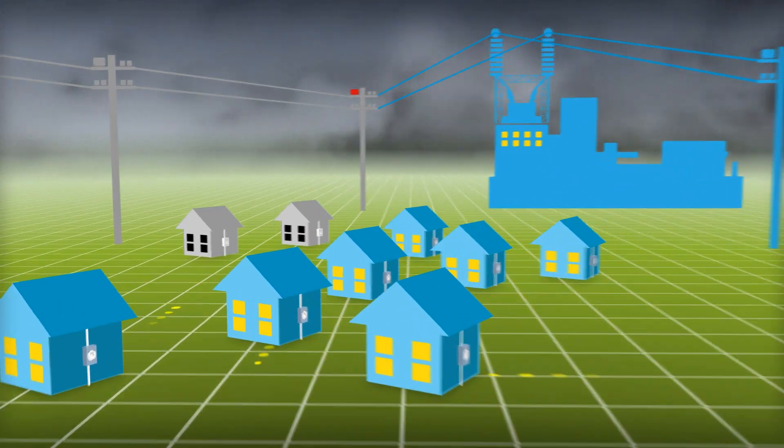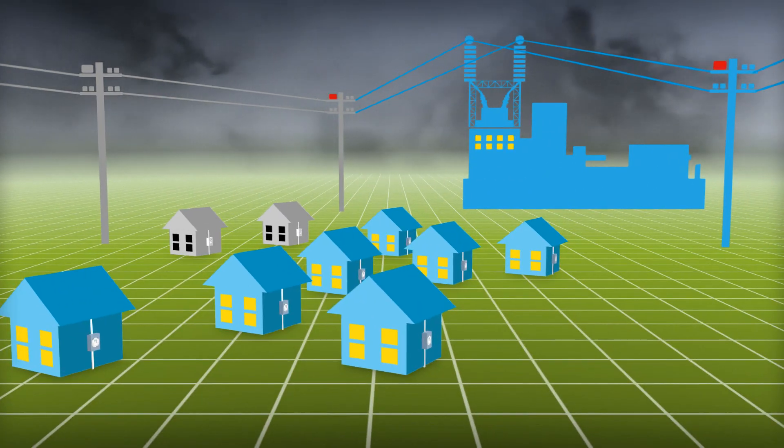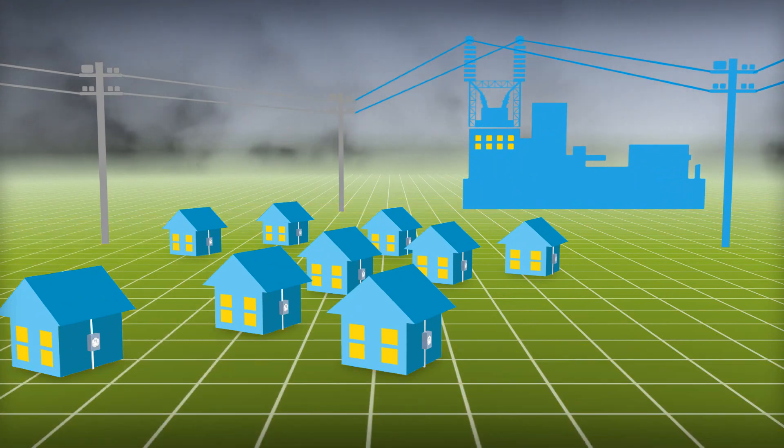And when the smart grid is complete, smart meters will automatically notify ComEd when you lose power, so your electricity can be restored more quickly.